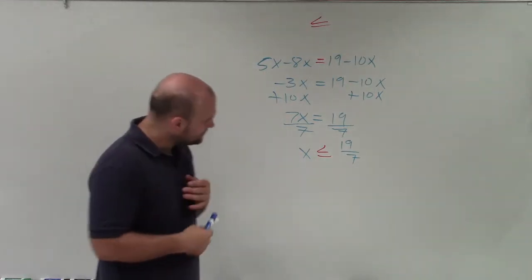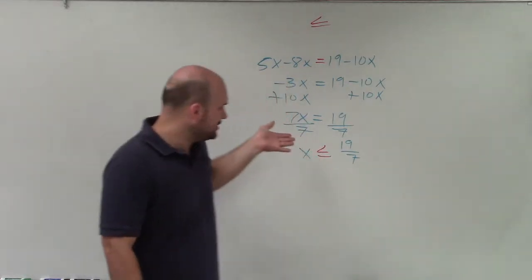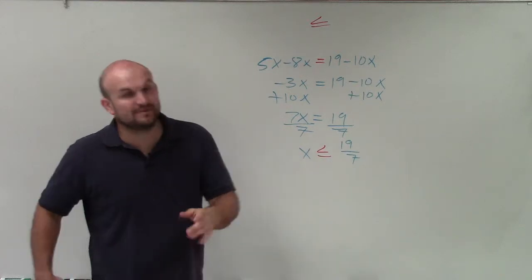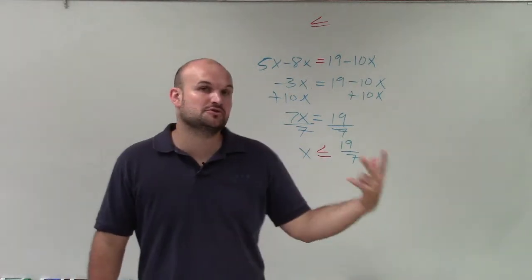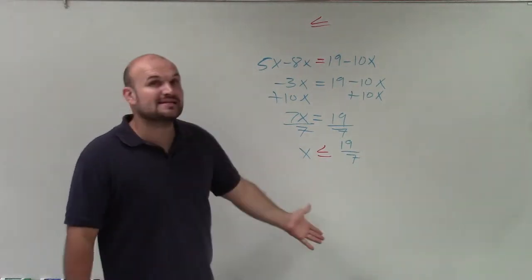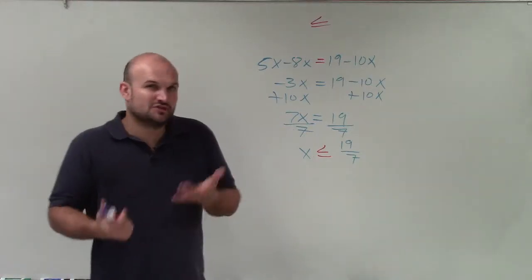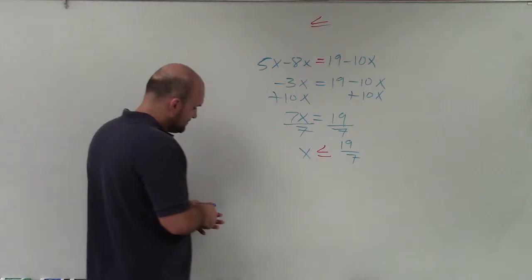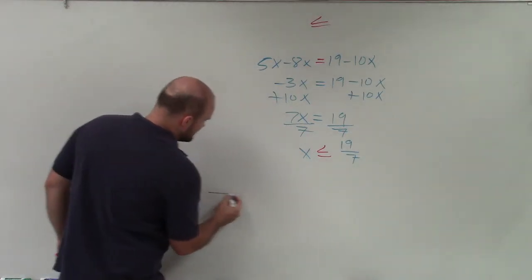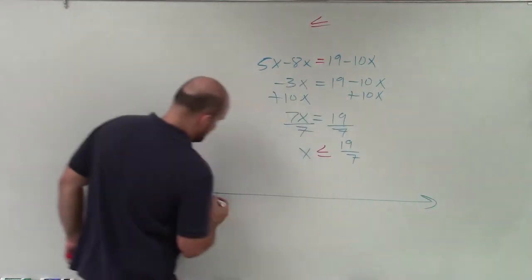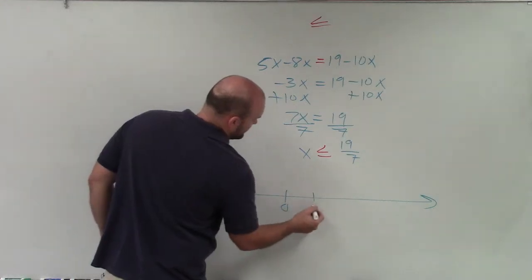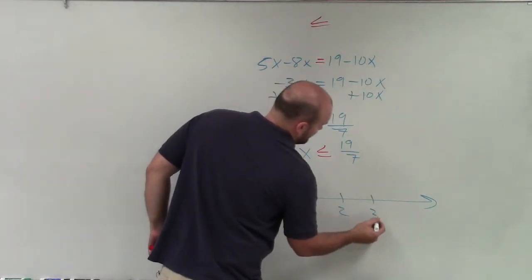So now I just need to graph this. Now, you could see that 7 divides into 19 at least two times, right? Because 7 times 2 is 14. But it doesn't go in there three times, because 7 times 3 is 21. So I'm roughly going to have a decimal of 2 and something. So when I'm looking into graphing this, I'm going to graph a nice number line. Here's 0, 1, 2, 3.